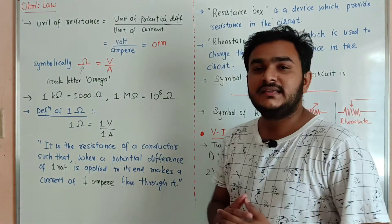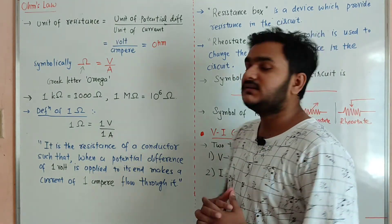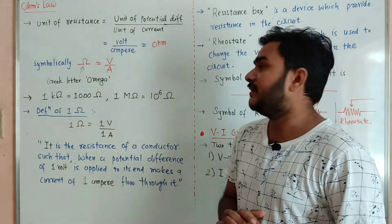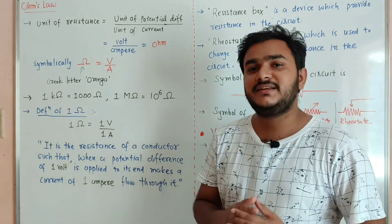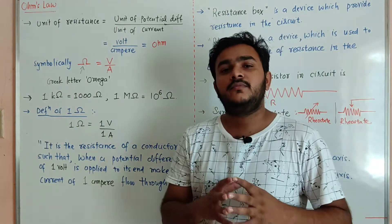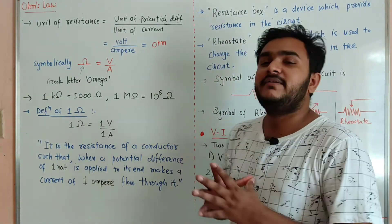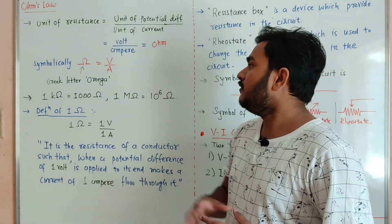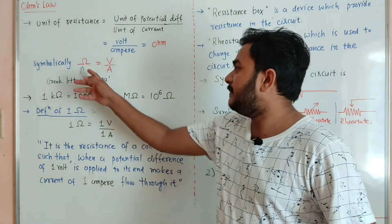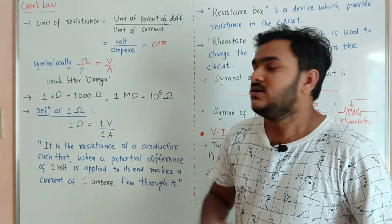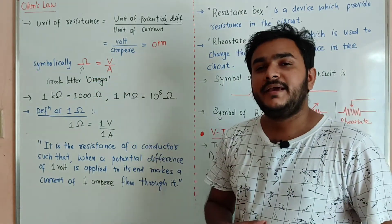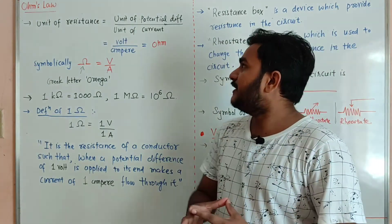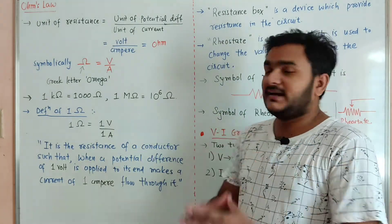The unit of resistance is equal to the unit of potential difference divided by the unit of current, that means volt divided by ampere. Volt is the unit of potential difference and ampere is the unit of current. Volt divided by ampere is the unit of resistance and it is generally called ohm. Symbolically, ohm is represented by the Greek letter omega. So omega is equal to volt per ampere.